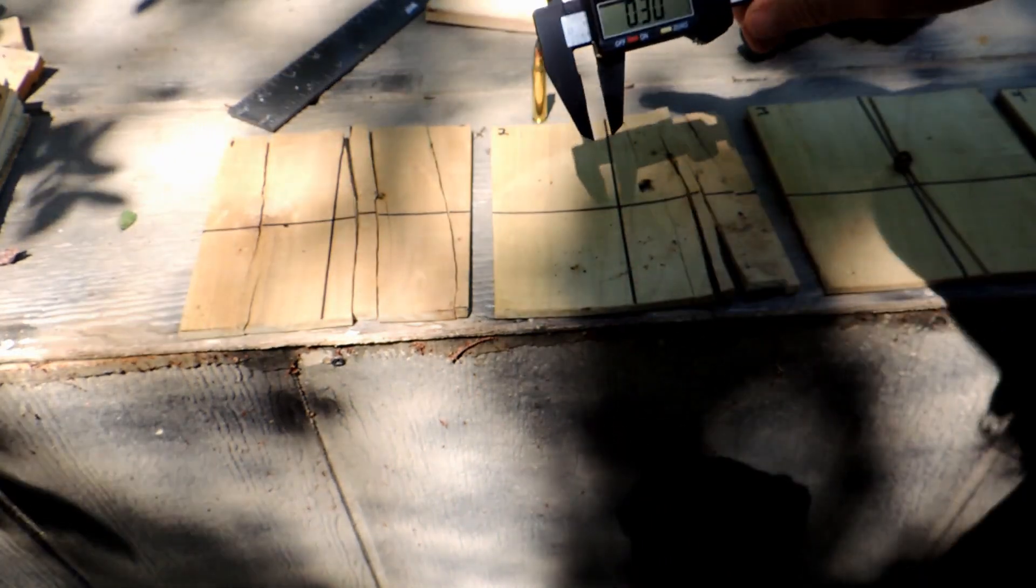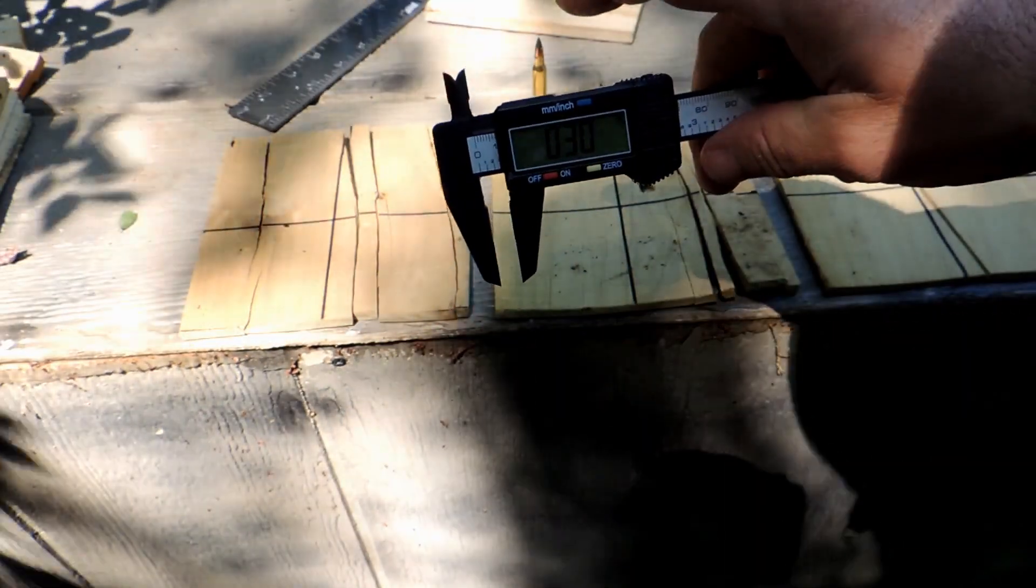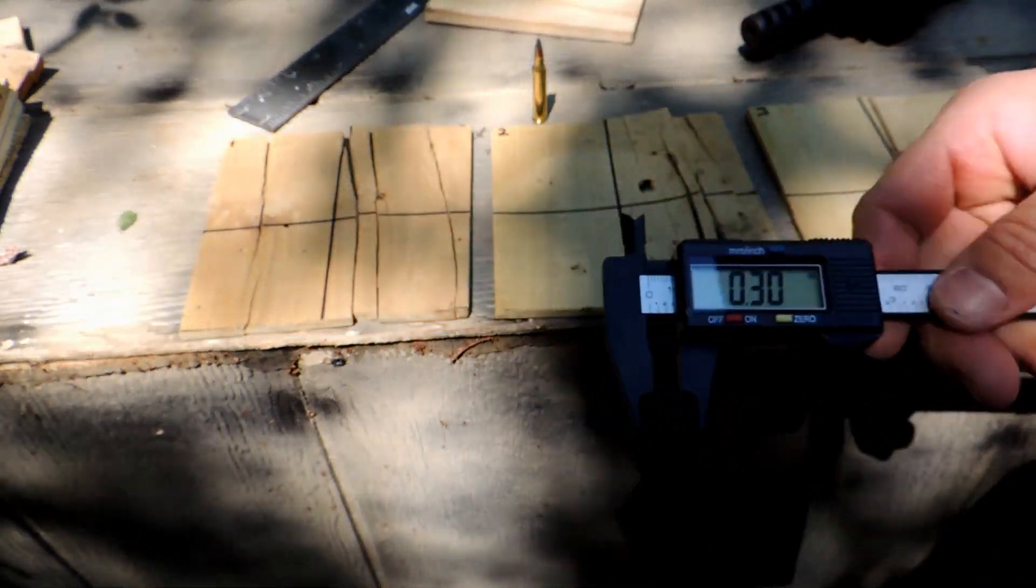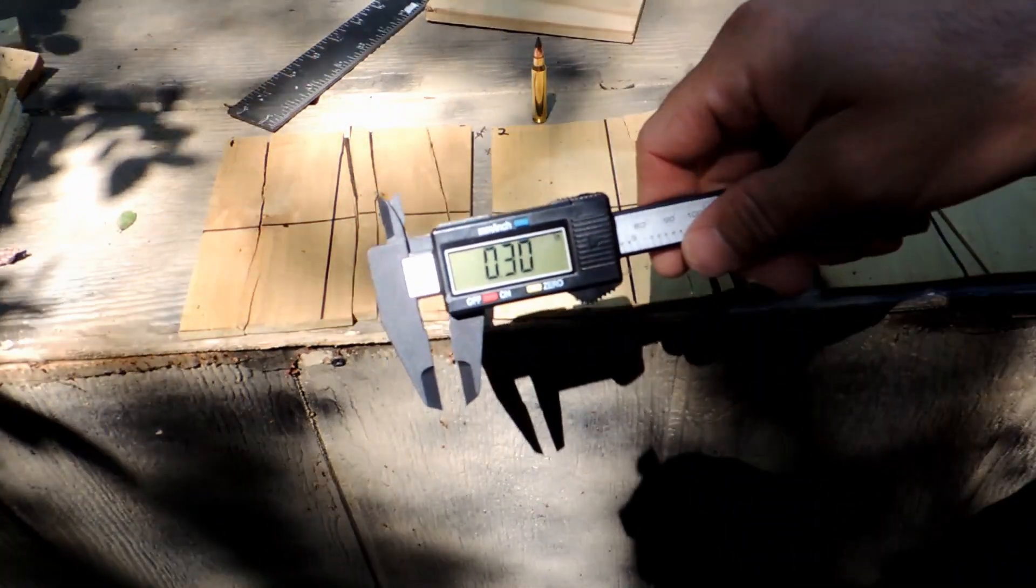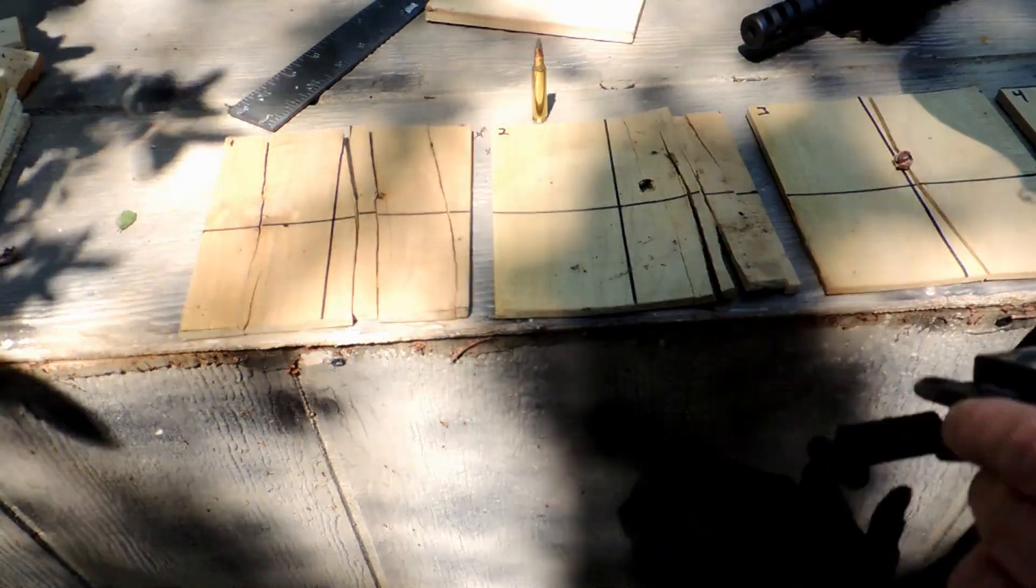Diameter of the hole is 0.03 inches. There you go. Turned into a blackout round. Right there.